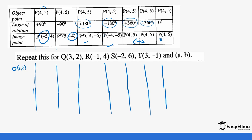For Q(3, 2): at positive 90° we swap to get (2, 3), then since it's positive 90° the x-value becomes negative, giving (−2, 3). At negative 90° we still have (2, 3) but now the x-value is negative, so (−2, 3). For positive 180° both signs change: (−3, −2), and the same for negative 180°. For ±360° and 0° the point stays at (3, 2).